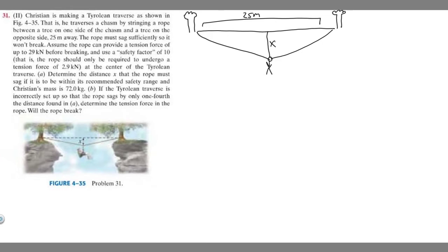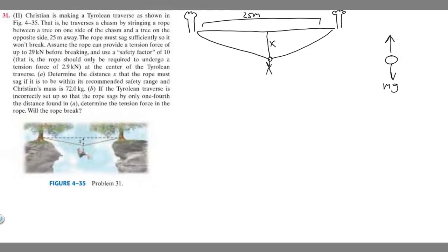The first thing we want to do is draw a free body diagram. This rock represents our person. What different forces do we have acting on them? We have a force pulling them down, which is m times g — their mass times gravity. We also have a force holding them up, which we'll call F sub y, the force in the y direction. That's just the tension.